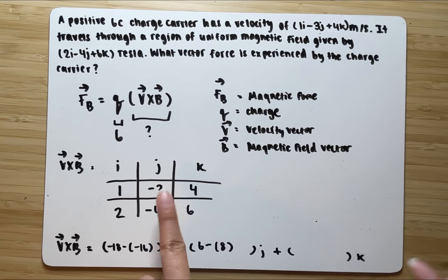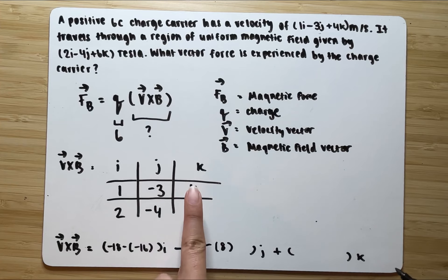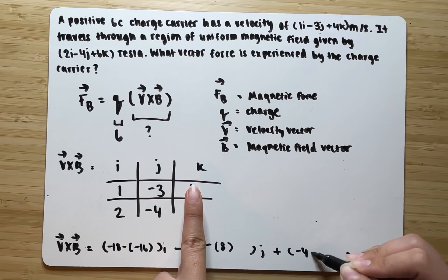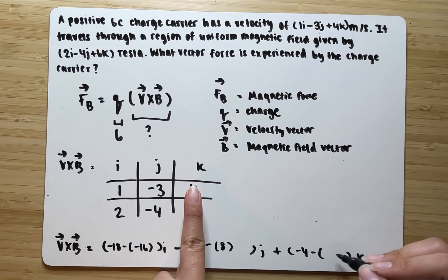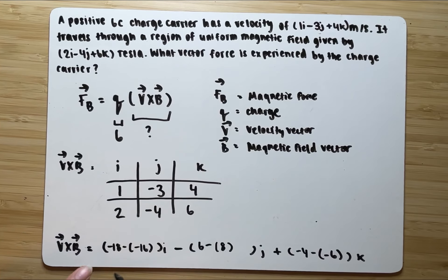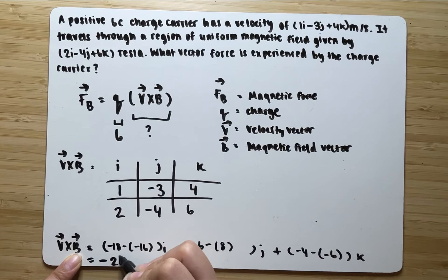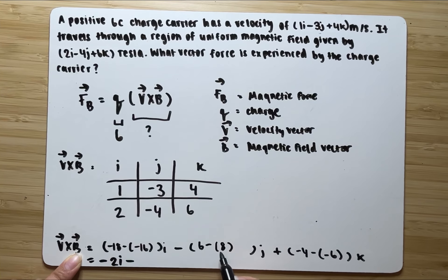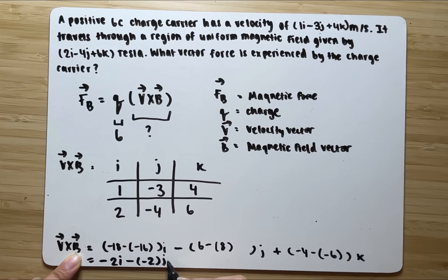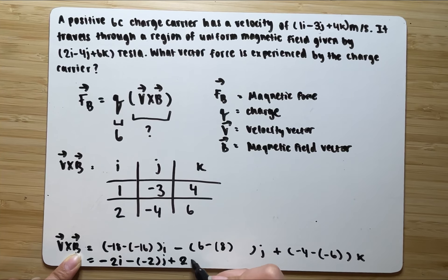For our k component, cover the k: 1 times negative 4 is negative 4, minus 2 times negative 3 is negative 6. So this is our k. We can now simplify: negative 18 minus negative 16 gives negative 2i; 6 minus 8 gives negative 2j; and negative 4 minus negative 6 gives negative 4 plus 6, which is 2k.